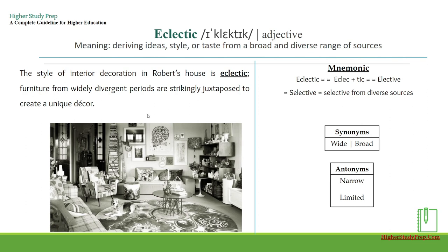Eclectic — it's an adjective which means deriving ideas, style, or taste from a broad and diverse range of sources. For example, the style of interior decoration in Robert's house is eclectic — furniture from widely divergent periods are strikingly juxtaposed to create a unique decor. The mnemonic for the word eclectic can be broken as 'eclectic' sounding like 'elective' or 'selective,' which means selective from diverse sources. Some synonyms can be wide and broad, whereas some antonyms can be narrow, limited.